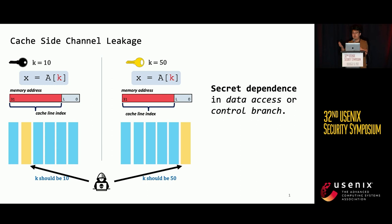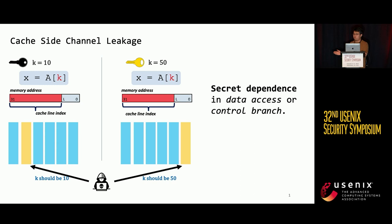From a software perspective, the root cause of cache side-channel leakage is a secret-dependent data access or control branch. For example, the variable key is a secret, and the address of this memory is decided by the variable key. When the value is certain, the second cache line is accessed, and similarly, if key equals 50, the last cache line will be accessed. As a result, by observing which cache line is accessed, attackers can infer the value of key.